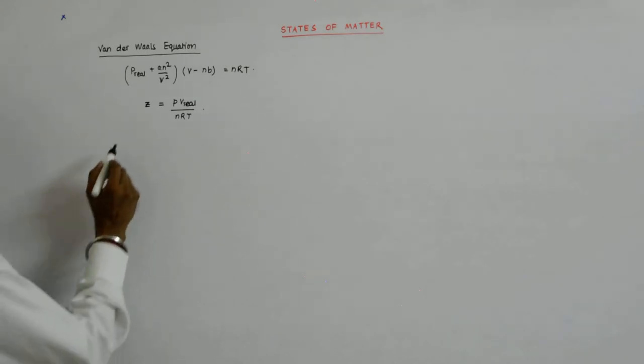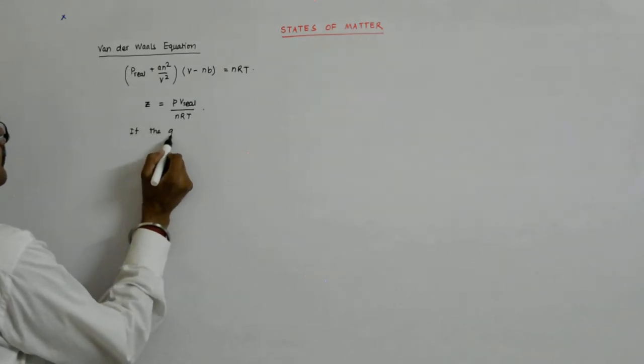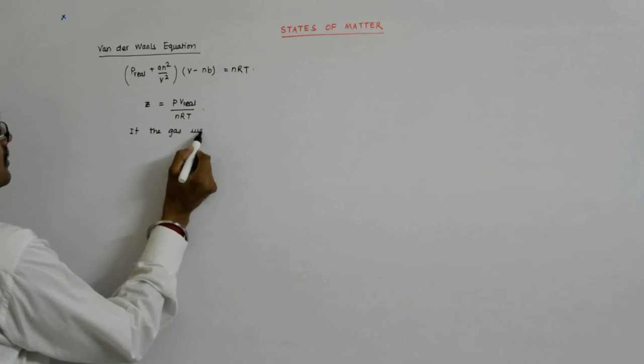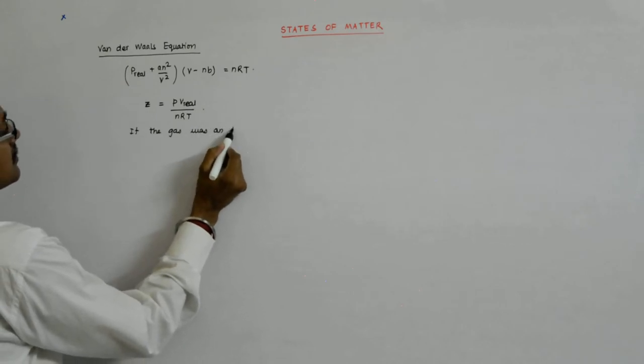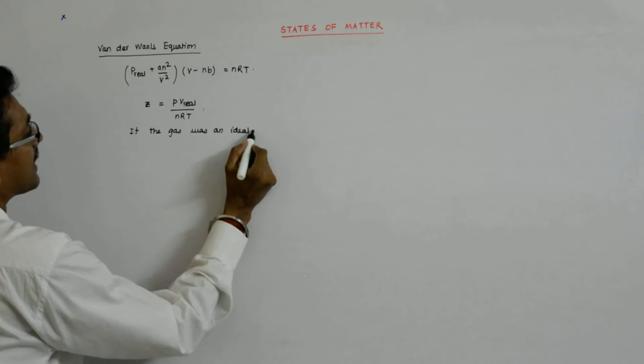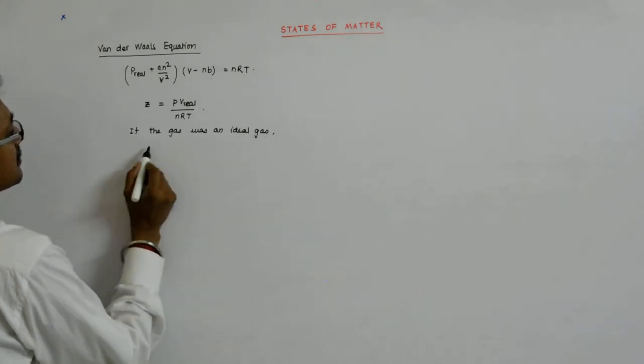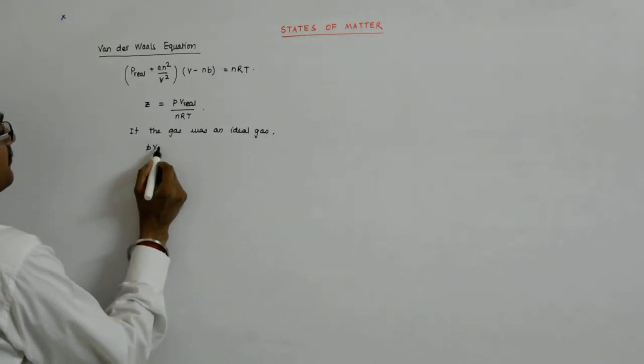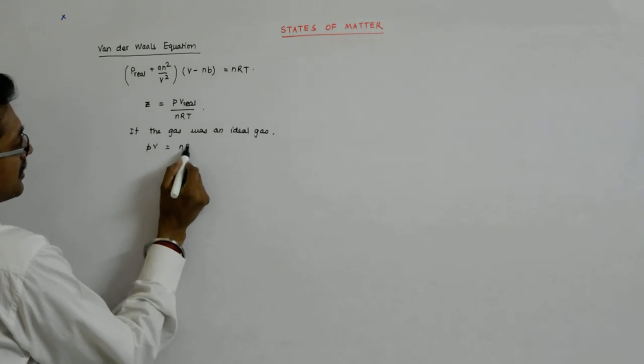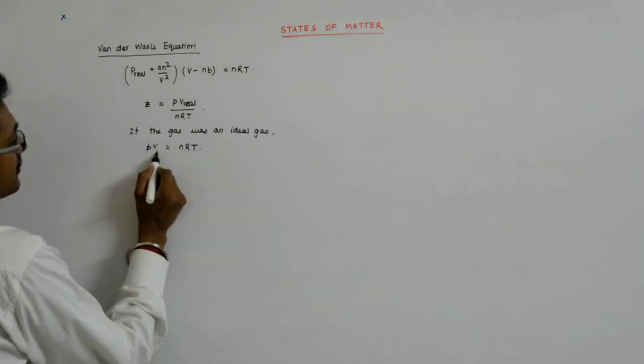Now if the gas was ideal, if the gas was an ideal gas, then PV is equal to nRT, that's V ideal.